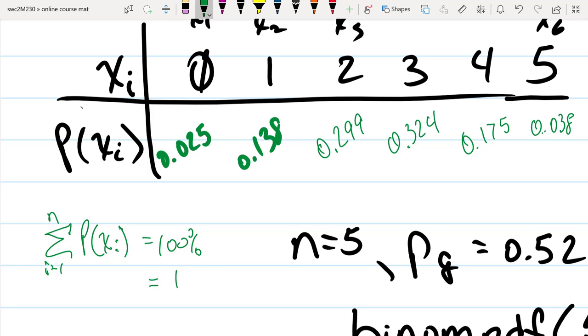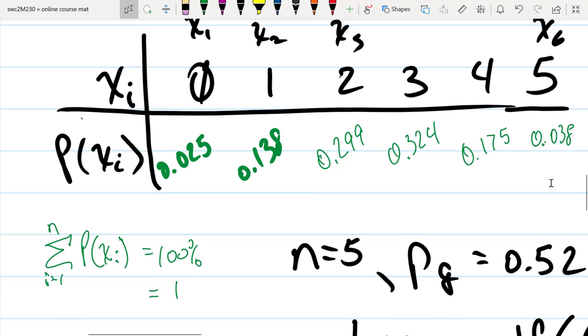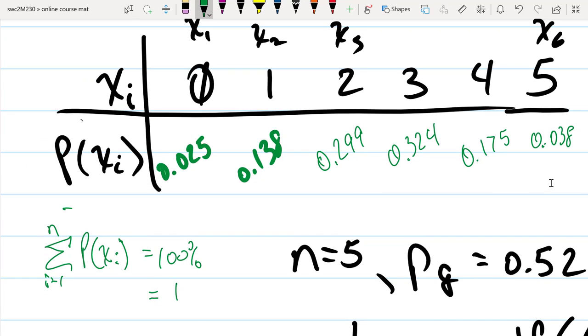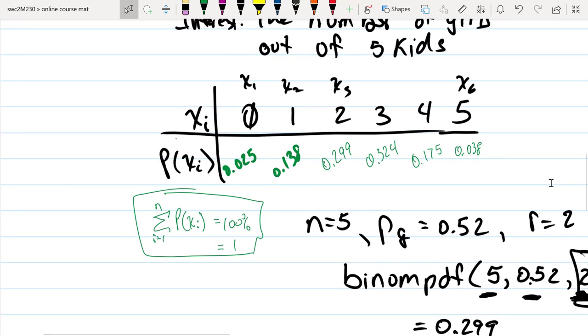We've done some rounding here just for the sake of demonstration. So that's the other characteristic of a probability distribution, and this is a common format where you have the random variables and the probability of those.